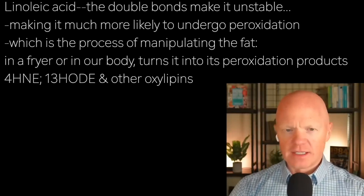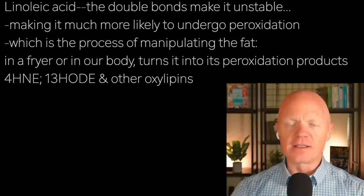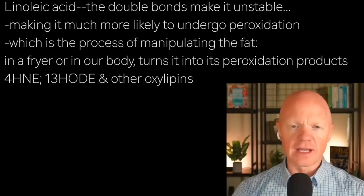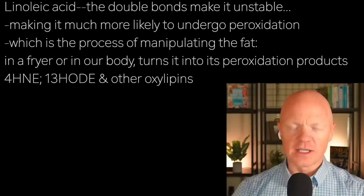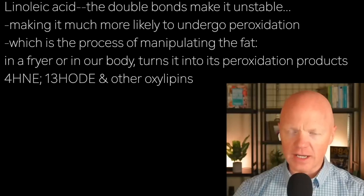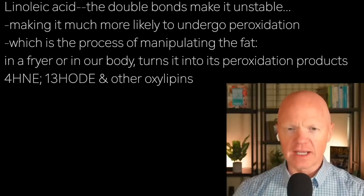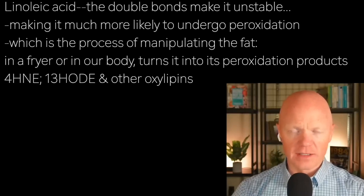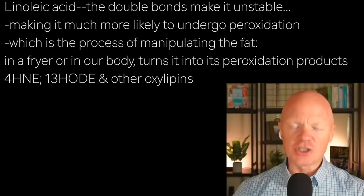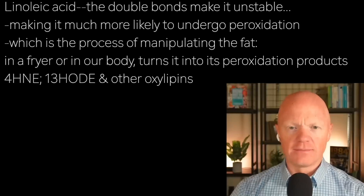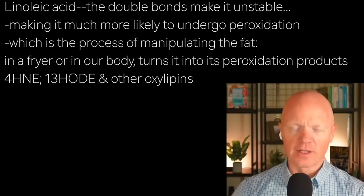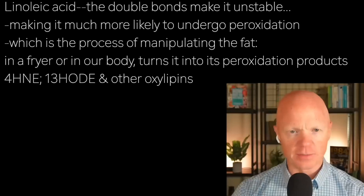Those double bonds in that polyunsaturated fat certainly make it unstable. The more unstable the fat is, the more likely it is to undergo peroxidation. Peroxidation can be this process of manipulating the fat, whether it is in a fryer or in our body. We end up converting the linoleic acid into its peroxidation products — like some of the big ones, 4-HNE or 13-HODE, and other oxylipins. Those are the main peroxidation products, or the little villains that are actually potentially the problem.